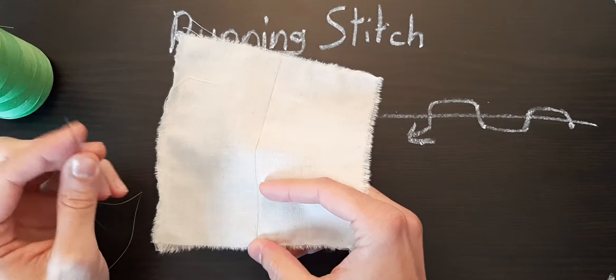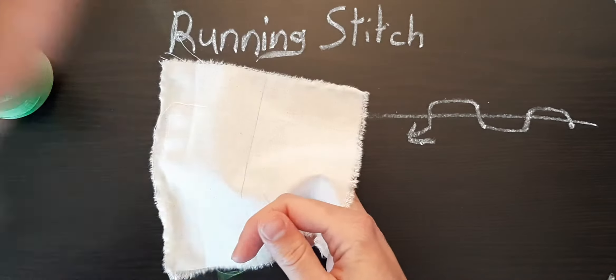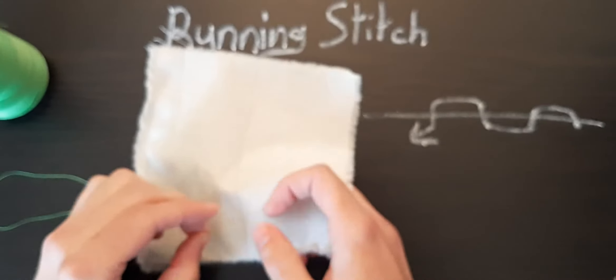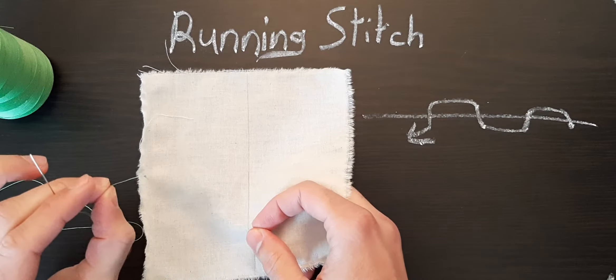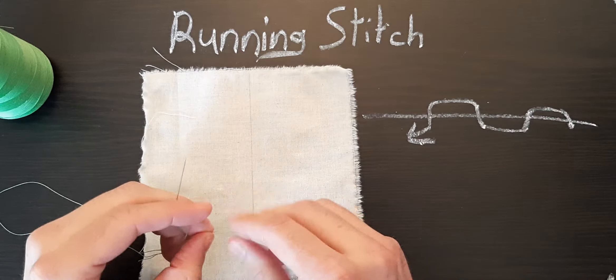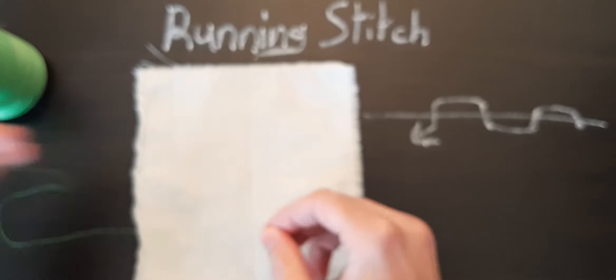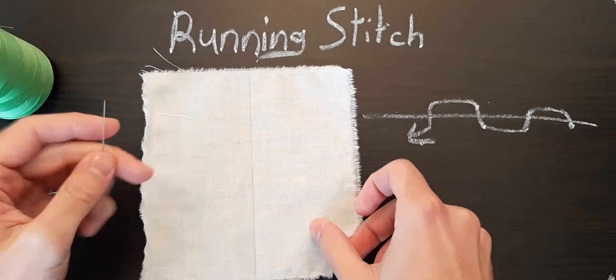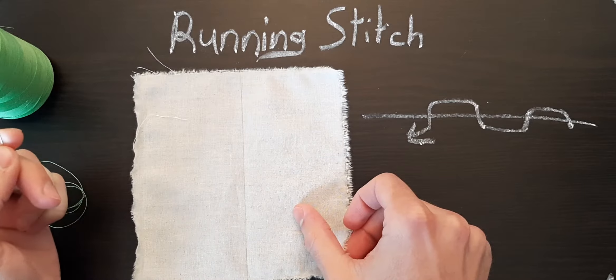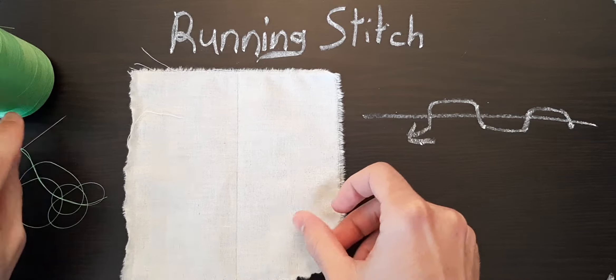And here's a little trick for you. If you notice that your knot keeps pulling out through the fabric, no matter what you did, you keep making your knot bigger and bigger, you keep tying it off, but it just keeps pulling through. What you can do is you can make an anchor stitch just to lock it in place.